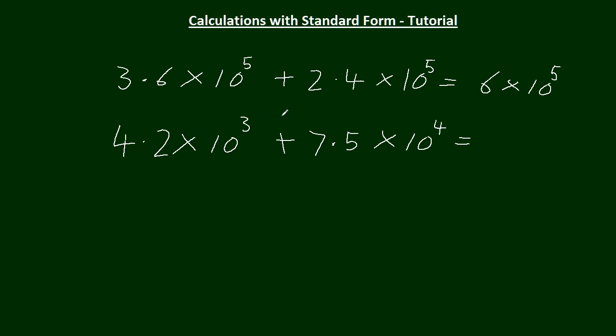Now if we look at this one, it's still an addition problem. But we've got 10 to the 3 and 10 to the 4. It's best to convert both parts to 10 to the 3 or 10 to the 4, and I think we'll make it 10 to the 3. So how do we make this one 10 to the 3? Look at this part here, 7.5 times 10 to the 4. We can write that as 7.5 times 10 times 10 to the 3. Rules of indices, adding them together would make 10 to the 4.